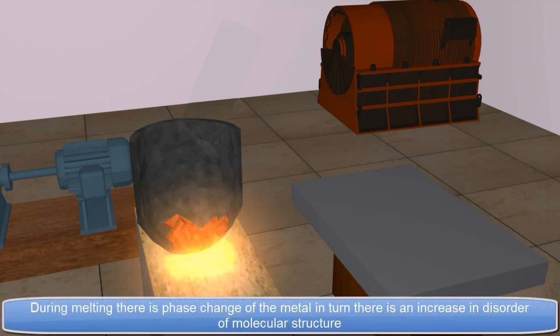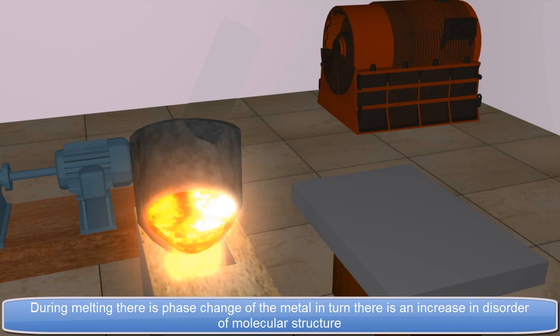During melting, there is phase change of the metal. In turn, there is an increase in disorder of molecular structure.